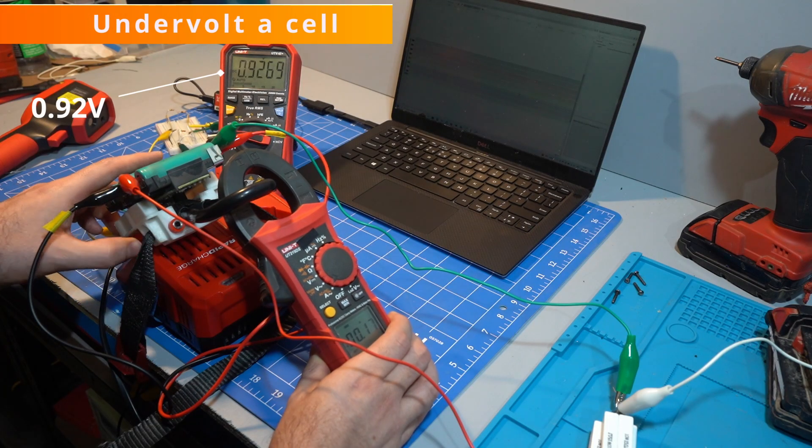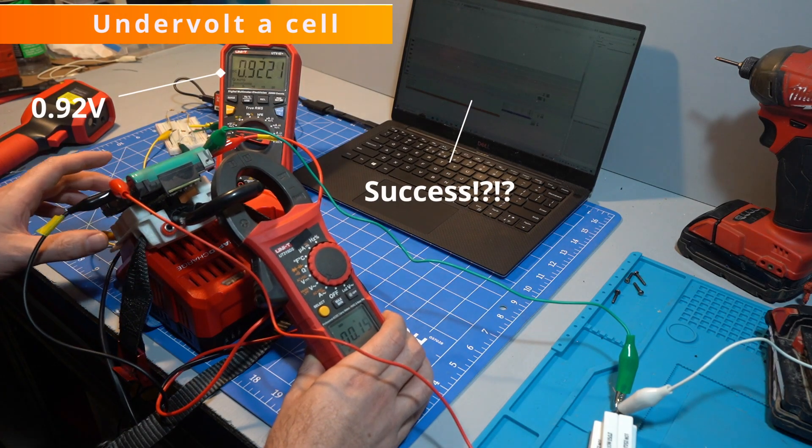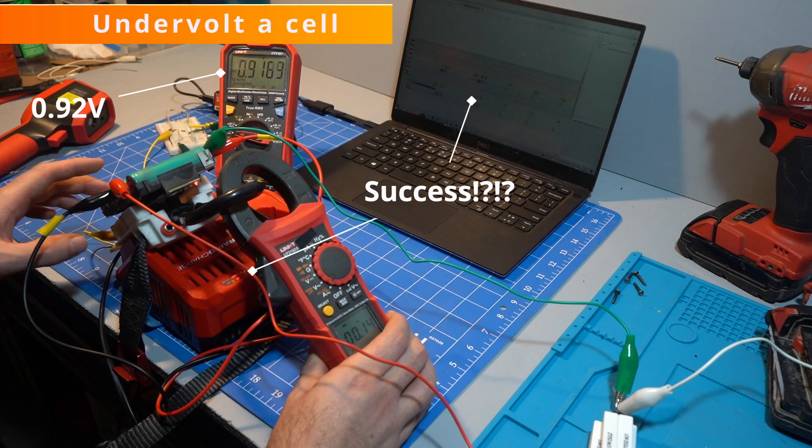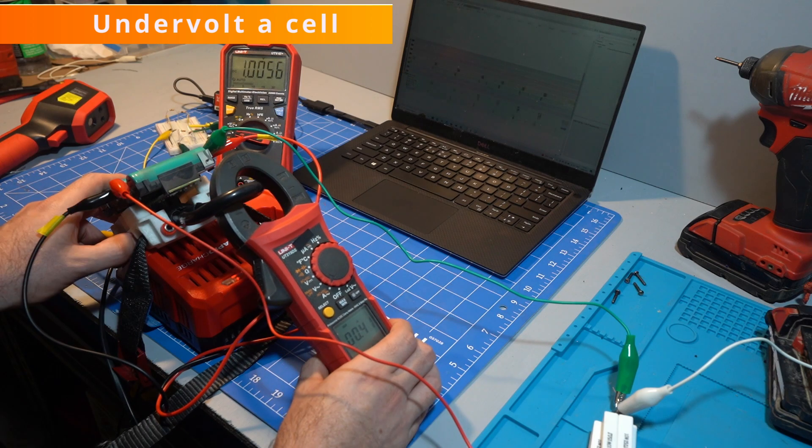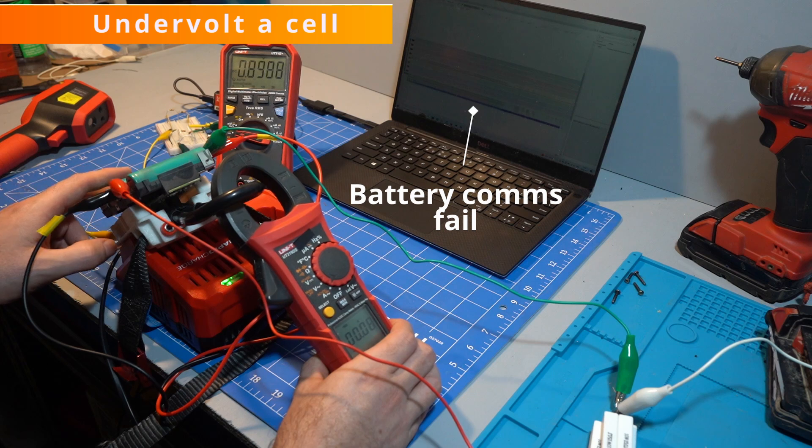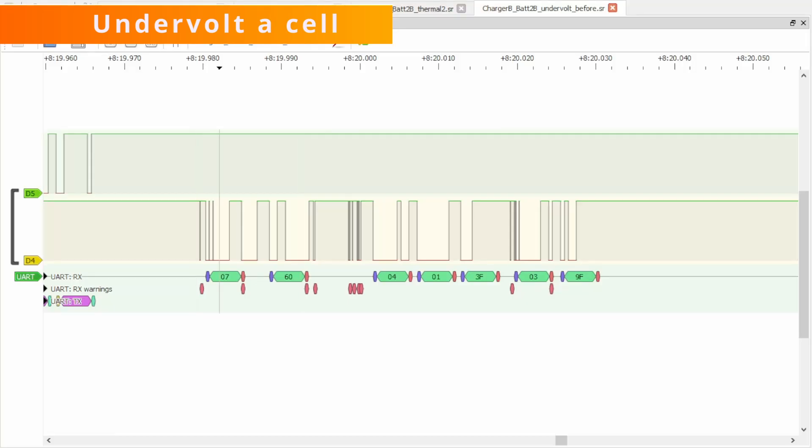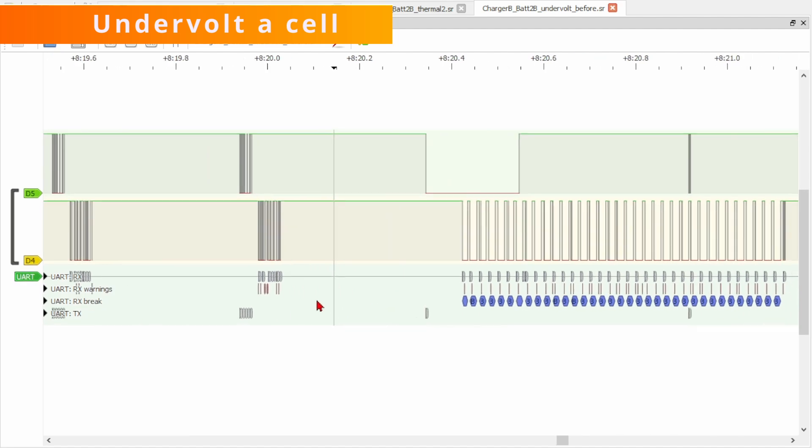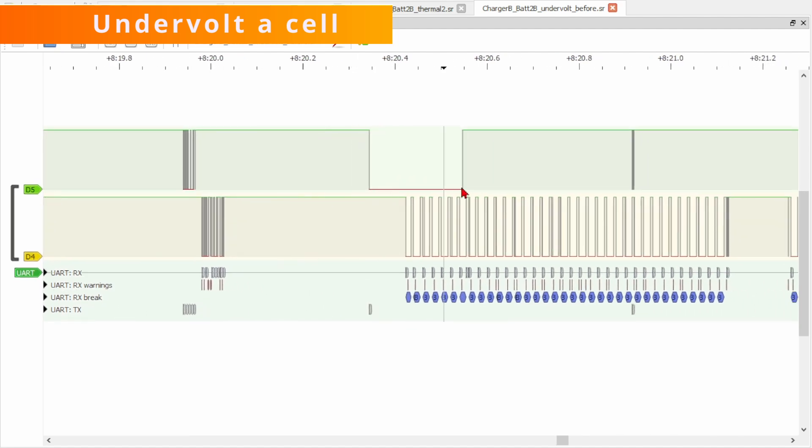Using power resistors to drain one cell did not reveal an undervoltage limit. I took a cell down to 0.92 volts and the charger still accepted it. Leaving the resistor on until it dropped to 0.89 volts did give an error, but this seems to be a comms error. The battery replies go to garbage for 4 messages and then the charger pulls low and errors.